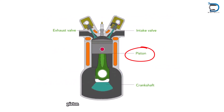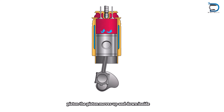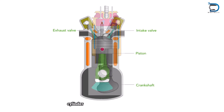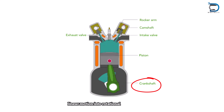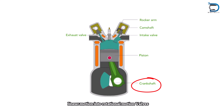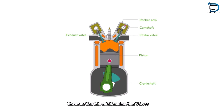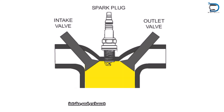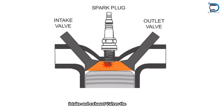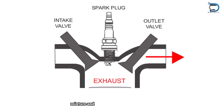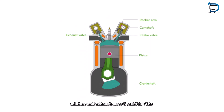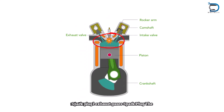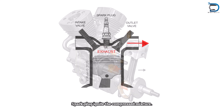Piston: The piston moves up and down inside the cylinder. Crankshaft: The crankshaft converts the linear motion into rotational motion. Valves: The intake and exhaust valves control the flow of air-fuel mixture and exhaust gases. Spark Plug: The spark plug ignites the compressed mixture.